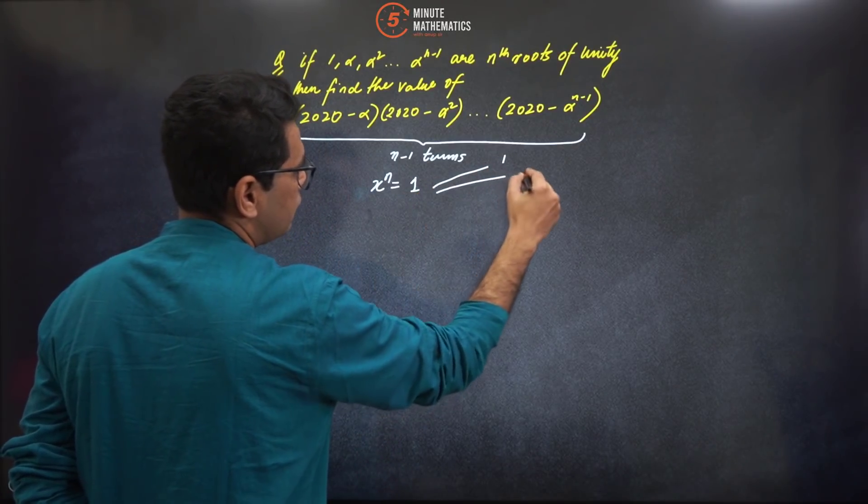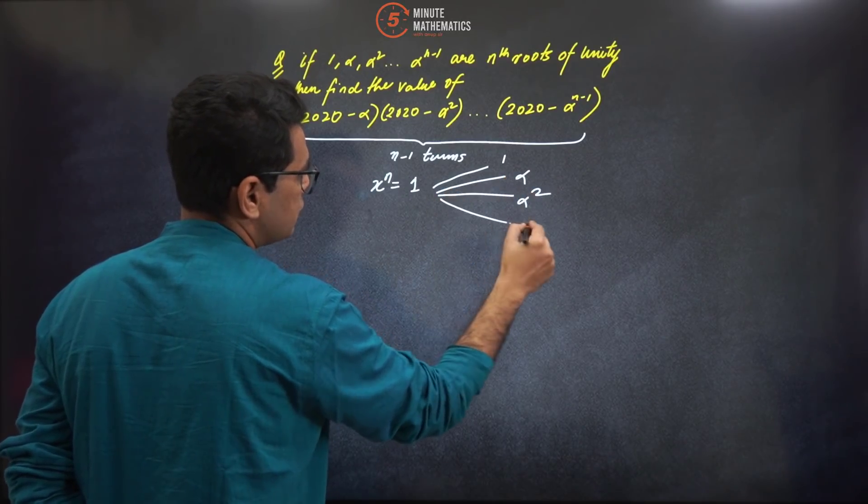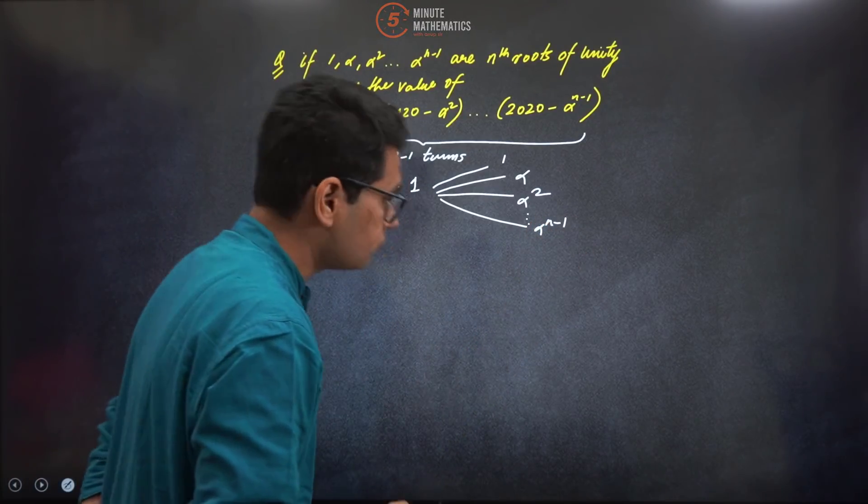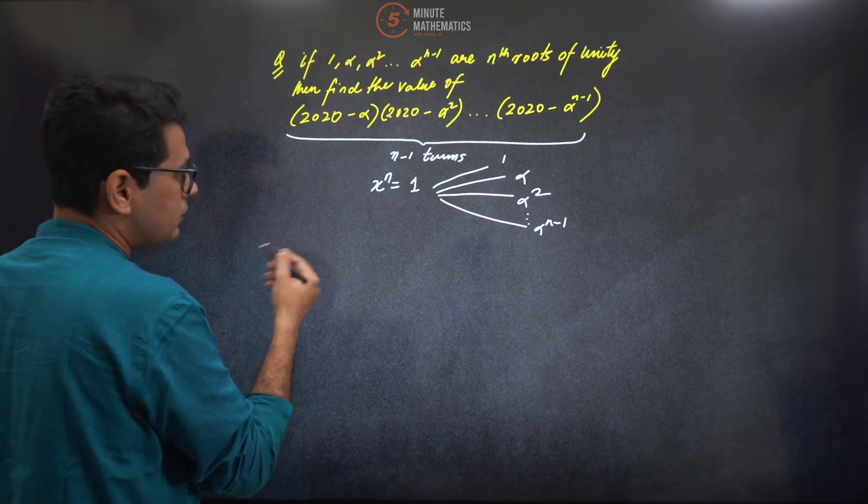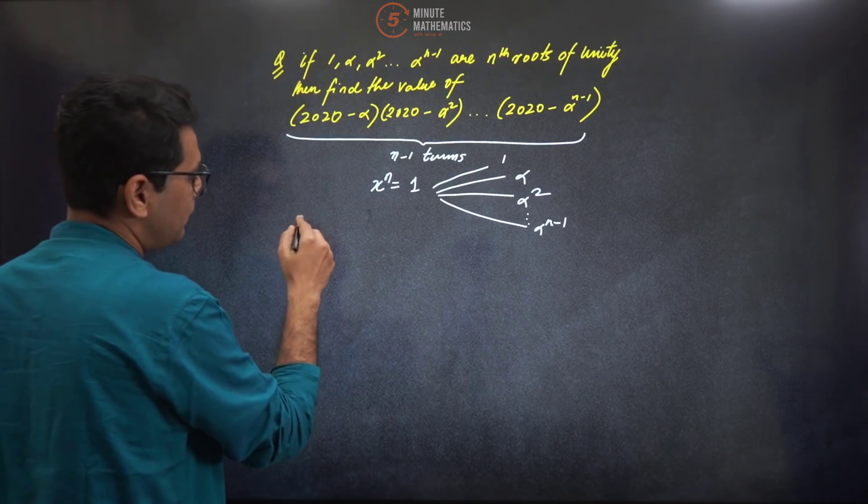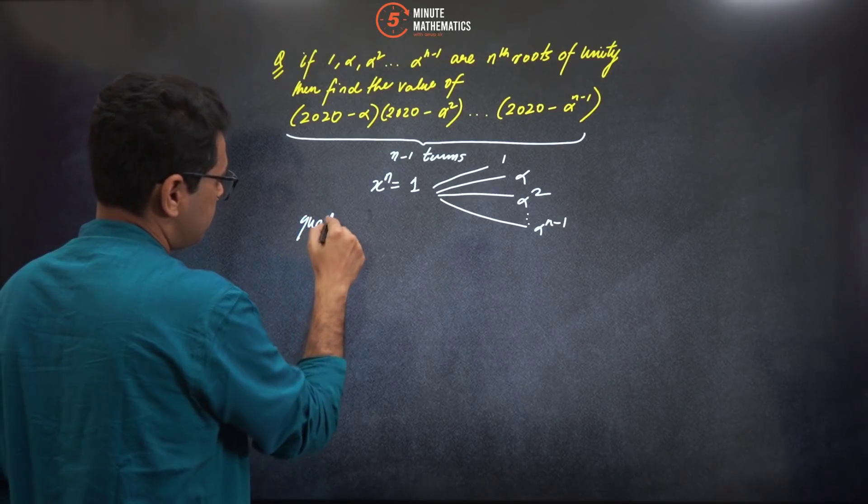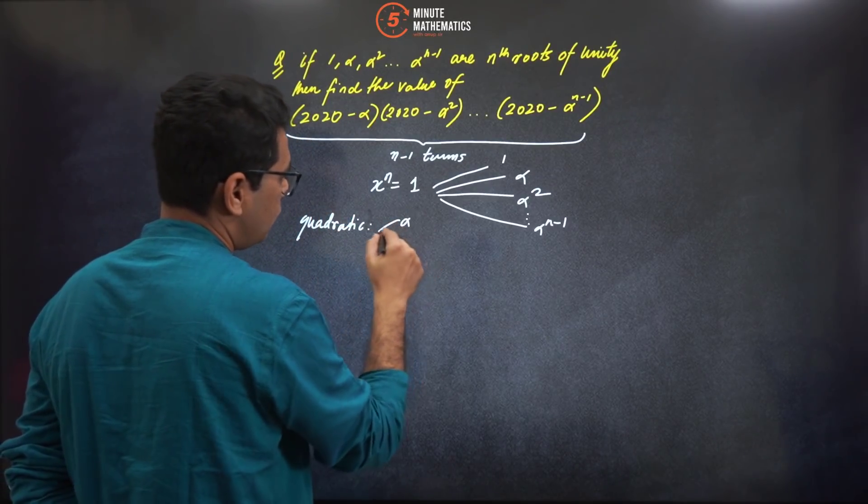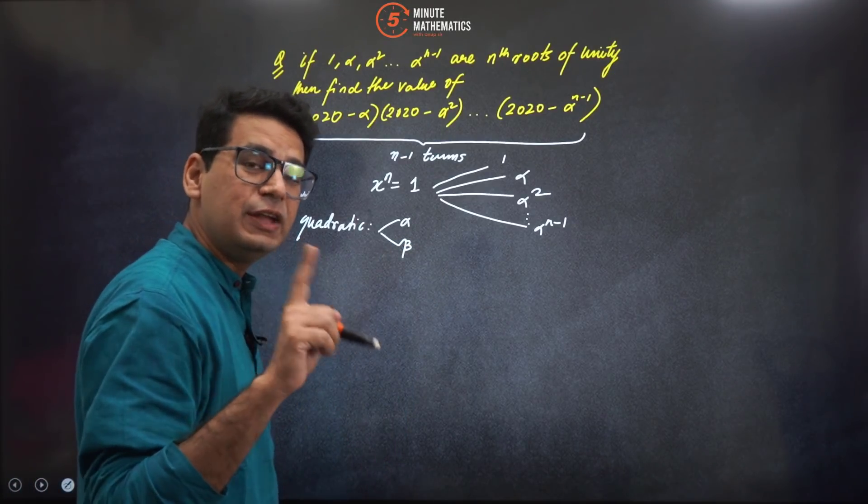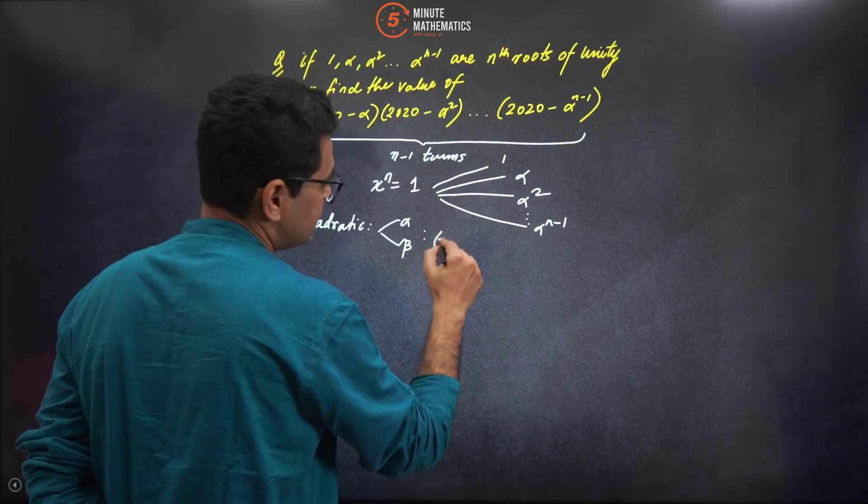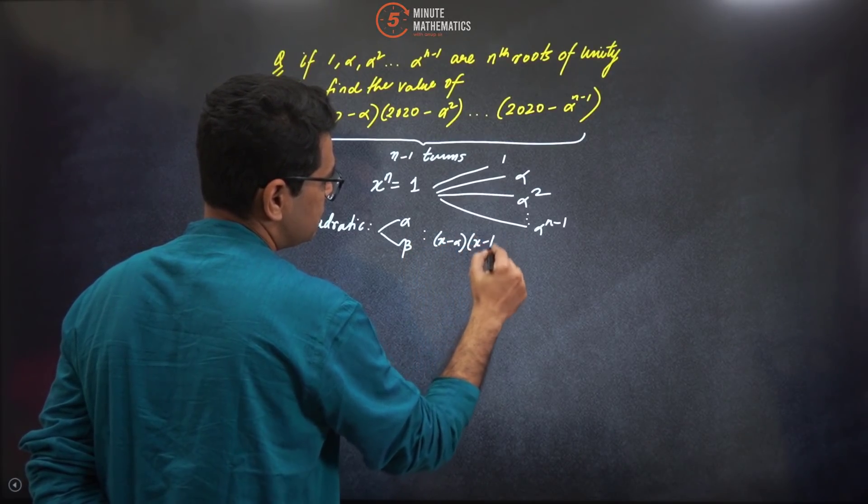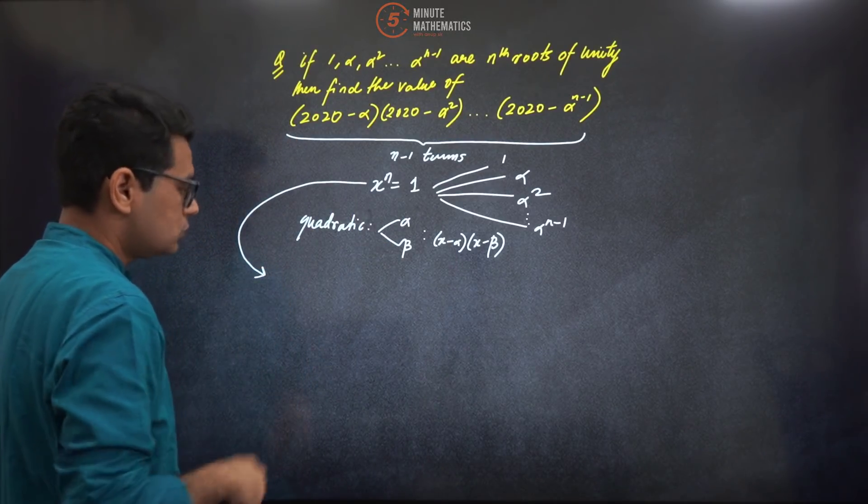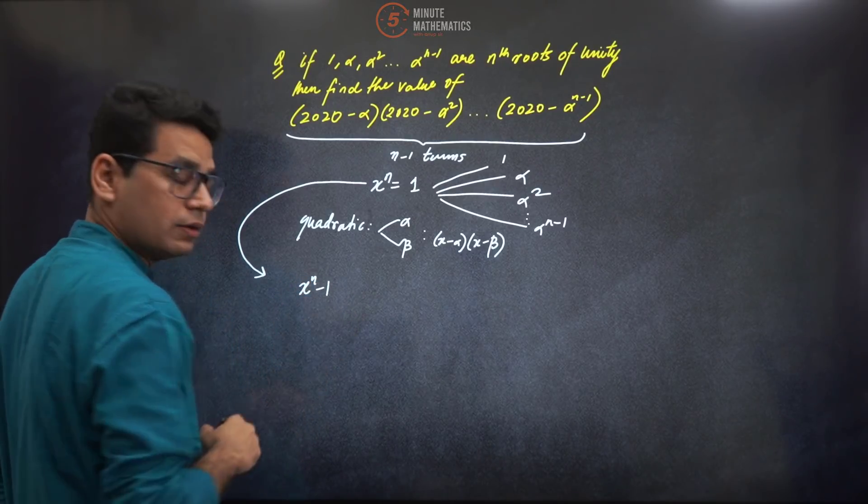Let's say you have given them as one, alpha, alpha square, and so forth, you have alpha raise to power n minus one - these are the roots. This is the basic fundamental here. If I talk about basics, let's say quadratic - if a quadratic has roots, it would be written as (x minus alpha)(x minus beta), right?